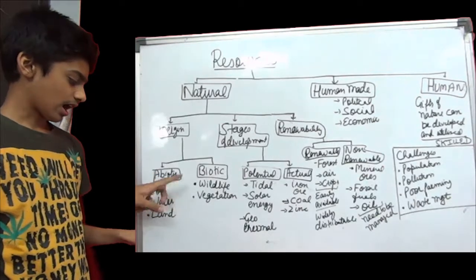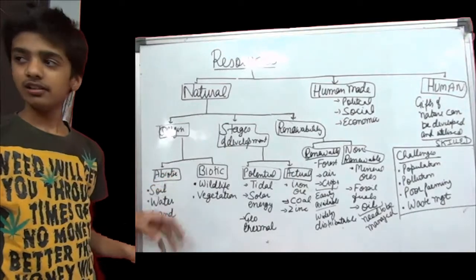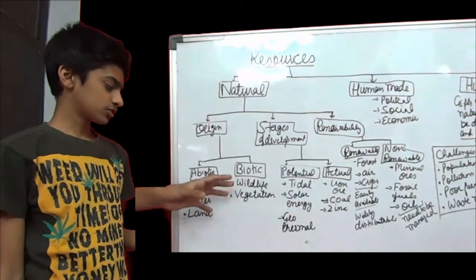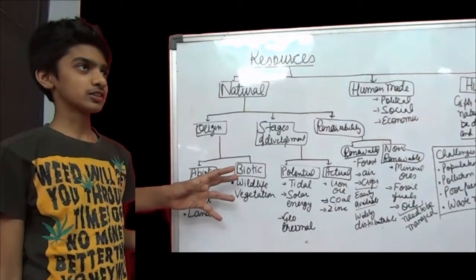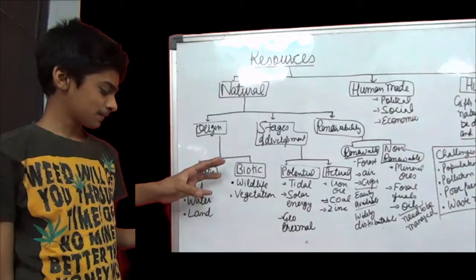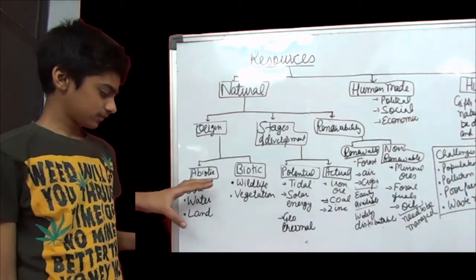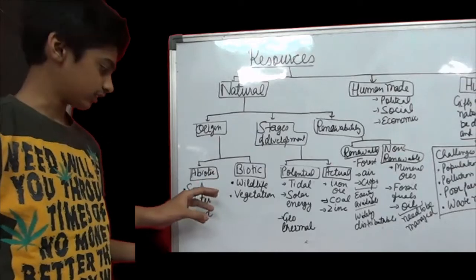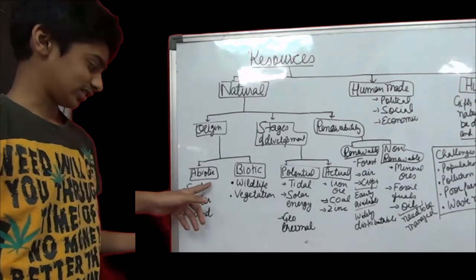Resources that are derived from the non-living environment are called abiotic resources, such as soil, water, and land.